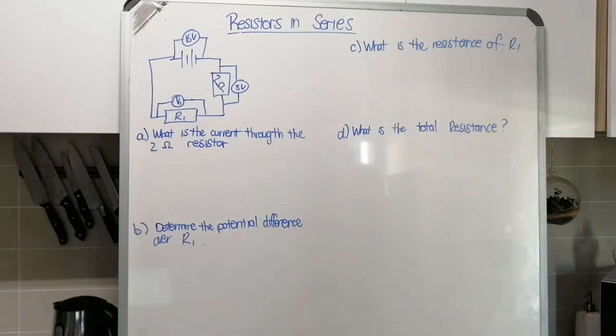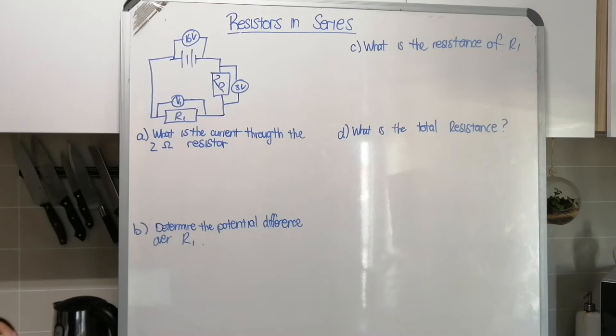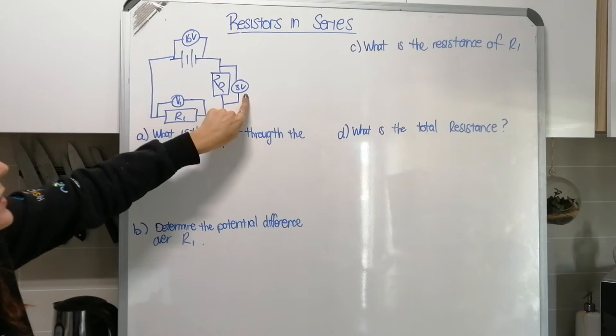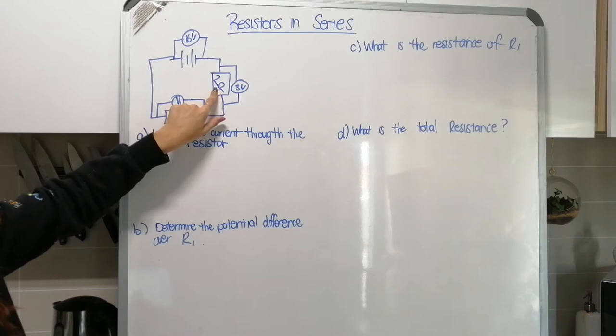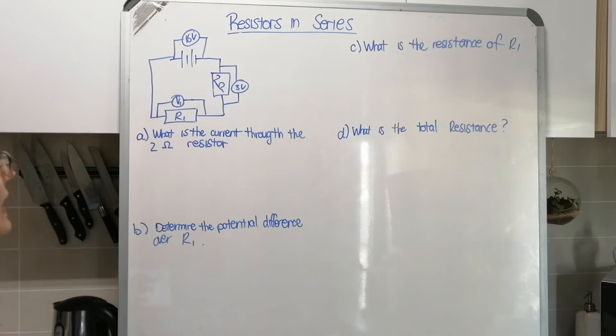Here is our example. We've got a diagram of a circuit with a battery. A voltmeter connected across the battery gives us a terminal potential difference of 16 volts — that means the whole circuit requires 16 volts. There's a 2 ohm resistor, and we're told that 3 of those 16 volts are used by the 2 ohm resistor. Then there's a second resistor labeled R1 with a voltmeter attached, labeled V1.